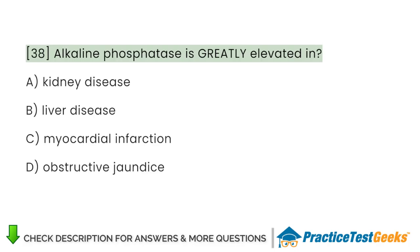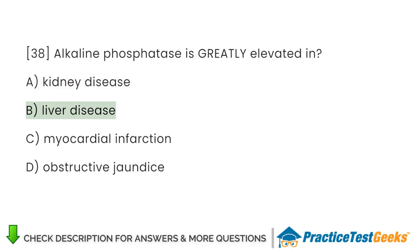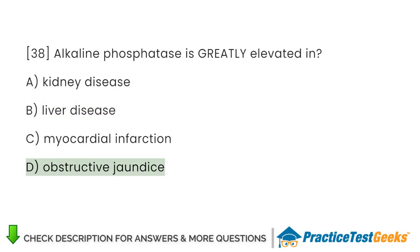Alkaline phosphatase is greatly elevated in: A. Kidney disease. B. Liver disease. C. Myocardial infarction. D. Obstructive jaundice.